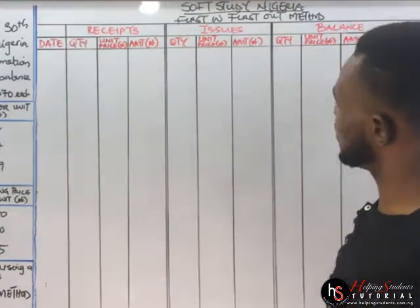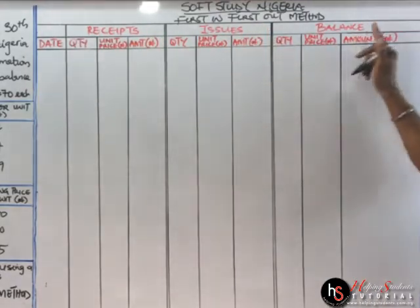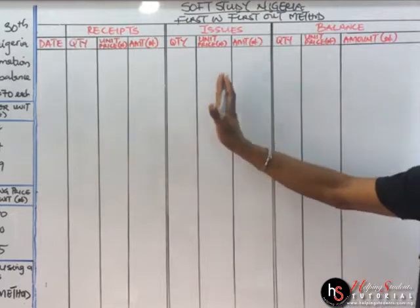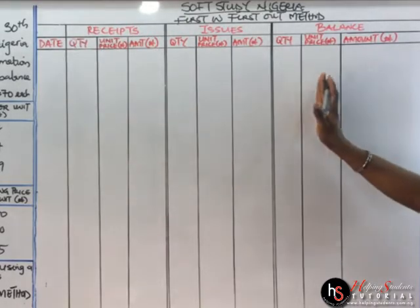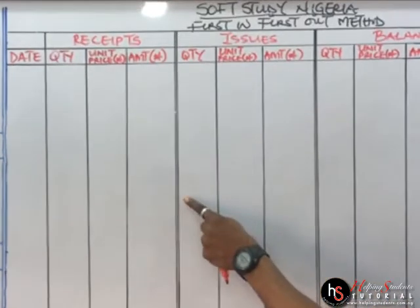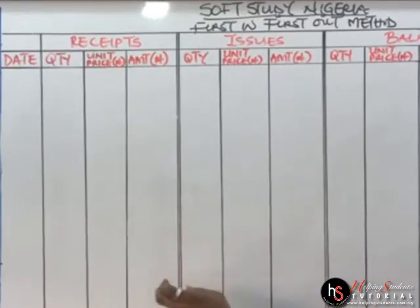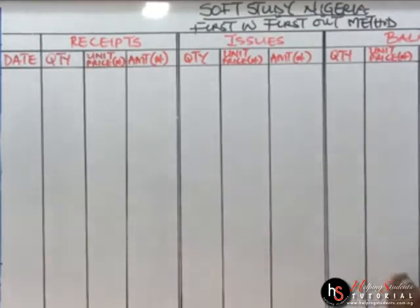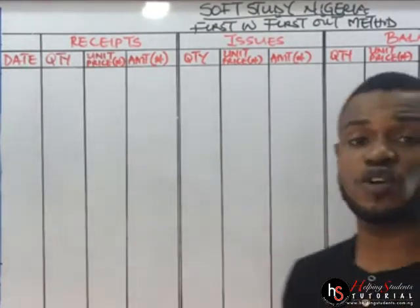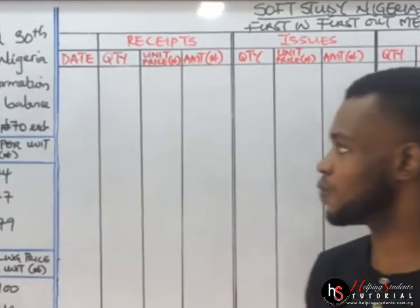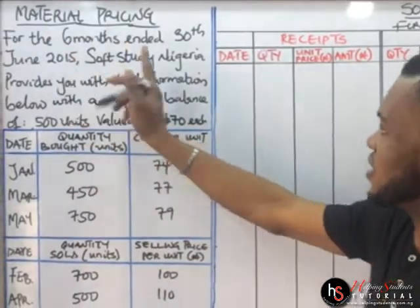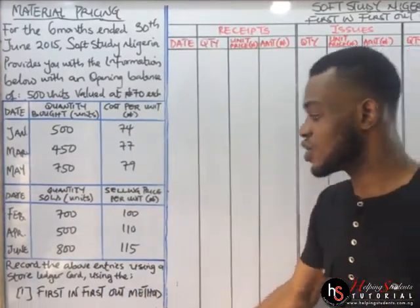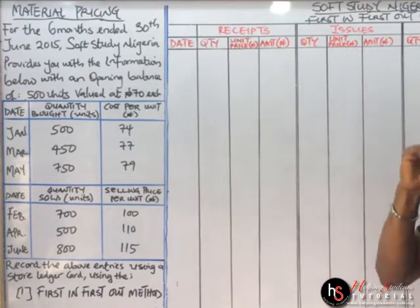The table remains this way. You have the receipts, the issues, and the balance. Then the quantity, unit price, and amount for each section. You can see the way I differentiated with a double line to show that this is for the receipts, this is for issues, and this is for balance — so you won't get confused in the exam hall. For the six months ended 30th June, it seems to show the ledger card using the first in, first out method.